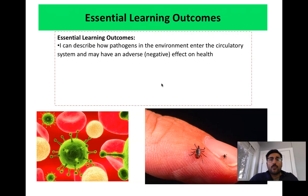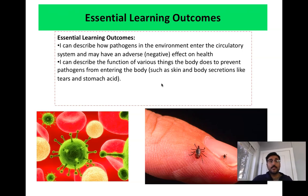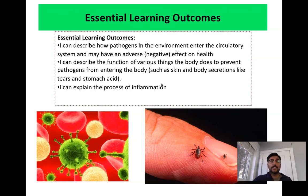By the end of this video, or perhaps the next — I might split this into two — you should be able to describe how pathogens in the environment enter the circulatory system, describe various ways the body can stop you from getting an infection such as skin or stomach acid, describe what inflammation is, and describe how the immune response works.